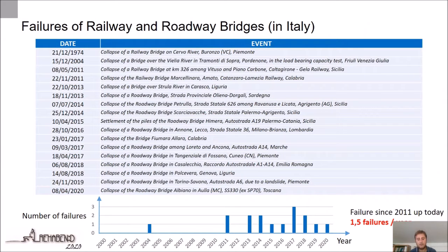Recently in Italy, we observed an increment in the number of collapse cases. In particular, it was observed, as reported in this table, that the average number of cases since 2011 up to today is equal to 1.5 failures per year.